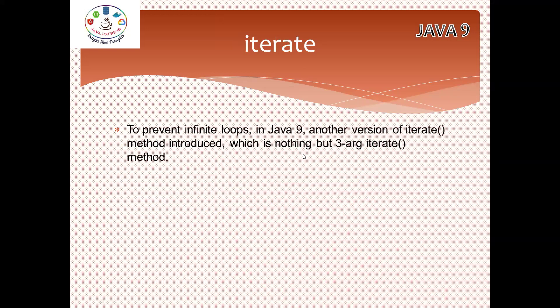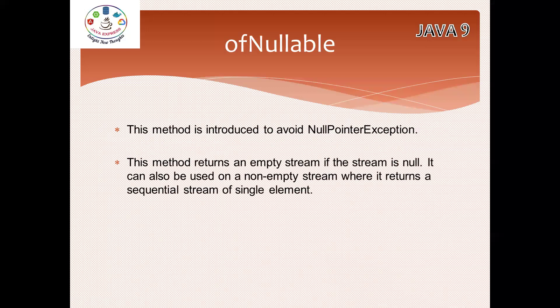The iterate method - in Java 8, iterate takes only two arguments. The main purpose of iterate is to prevent infinite loops. In Java 9 we have another version of iterate with a three-argument constructor. Previously it had a two-argument constructor; in Java 9 it is a three-argument constructor.